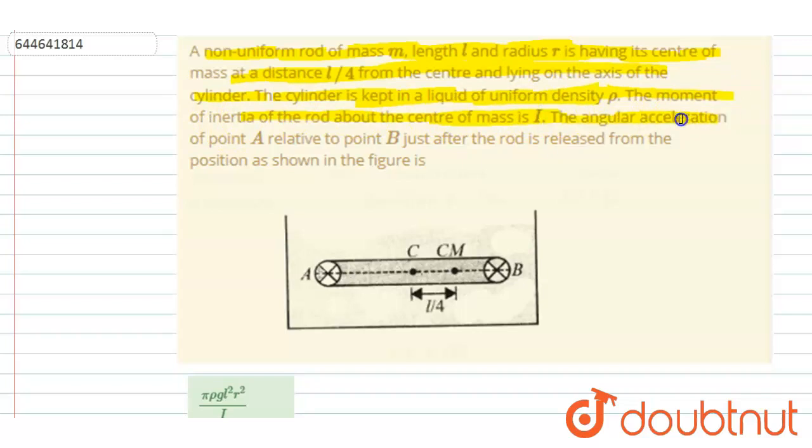If the center of mass is at I, find the angular acceleration of point A relative to B just after the rod is released from the position shown in the figure.